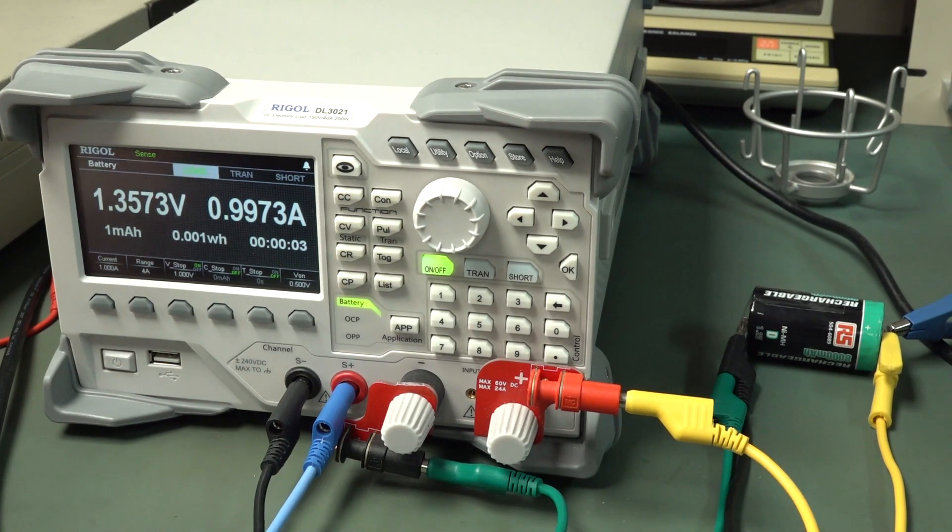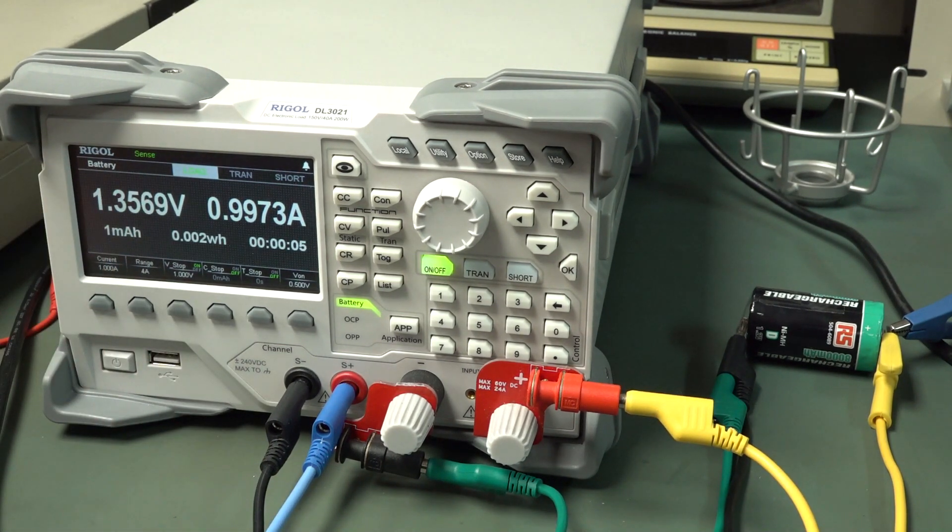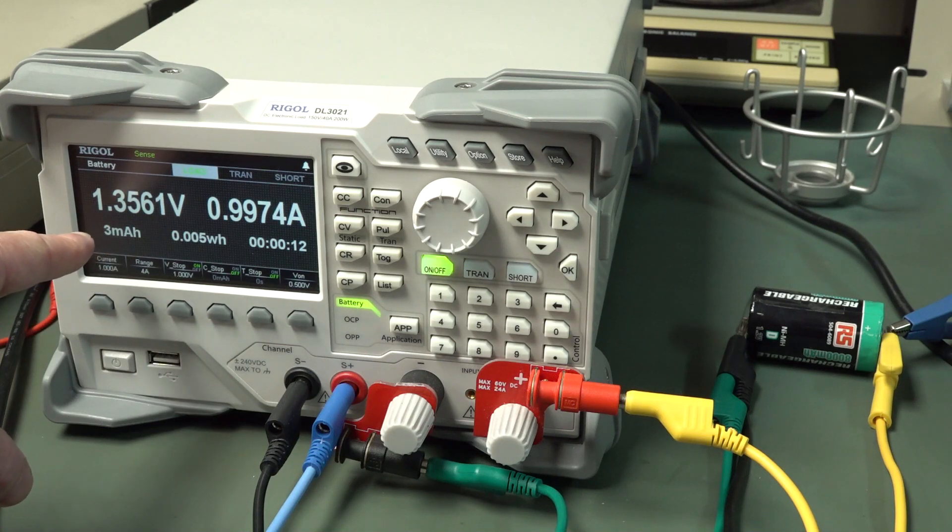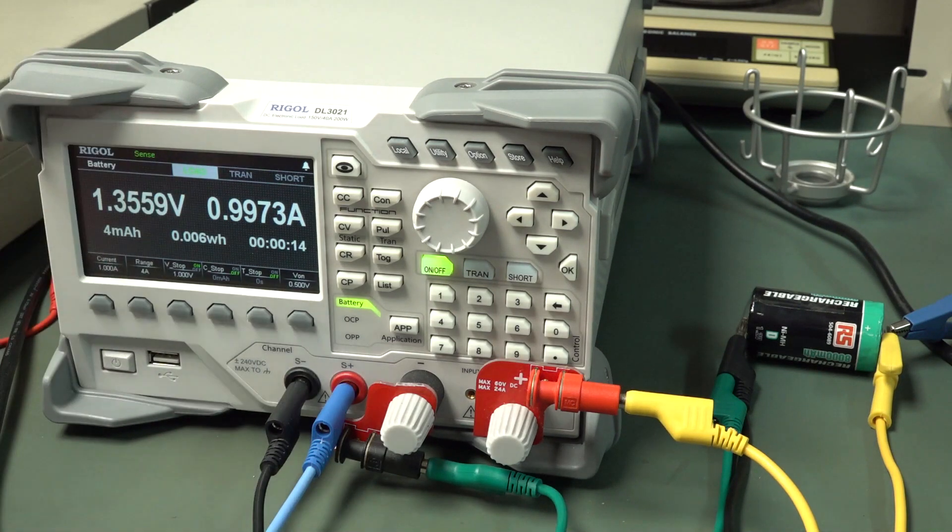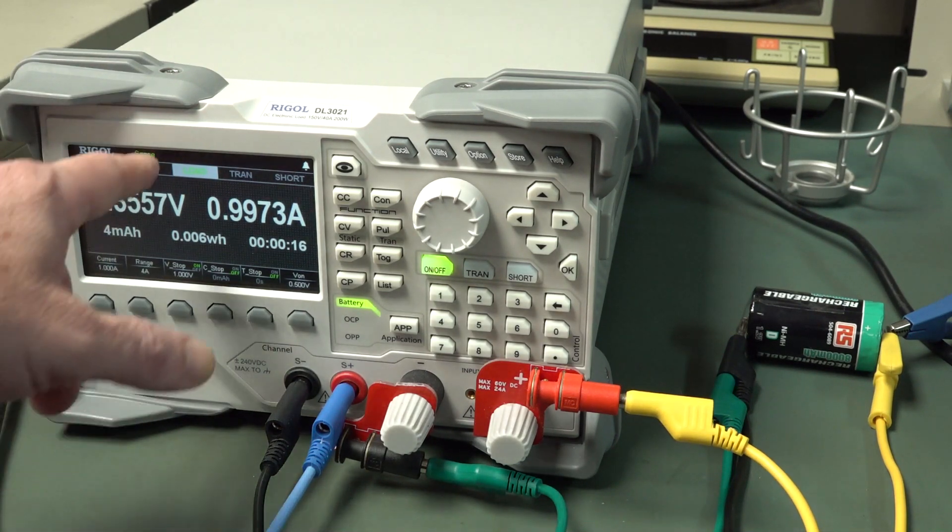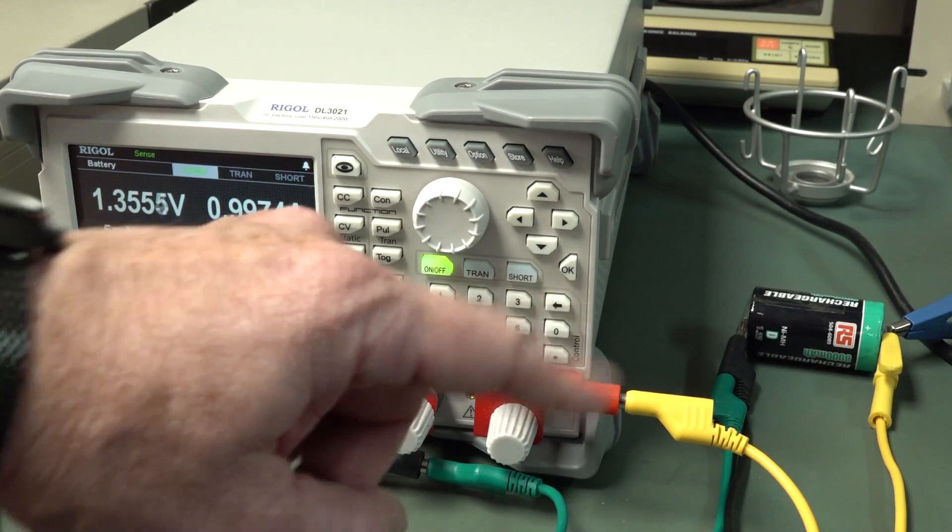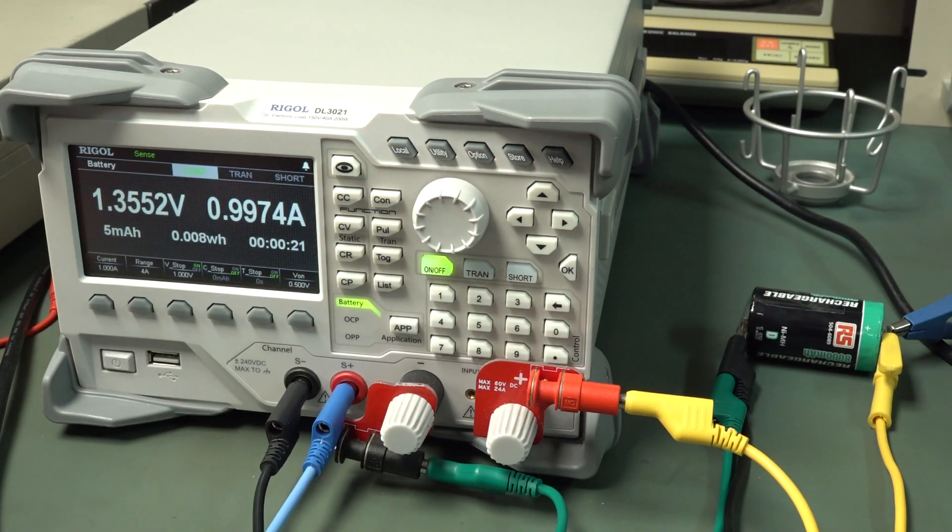There we go. 1 amp load. It's time in. There we go. We've extracted 1 milliamp hour and I'll just leave that running for a basic... Well, it'll automatically stop and then give us the accumulated value here so I don't have to watch it. It'll just automatically stop when it gets to the 1 volt discharge point, at which point the curve basically starts dropping off like a brick wall, really.